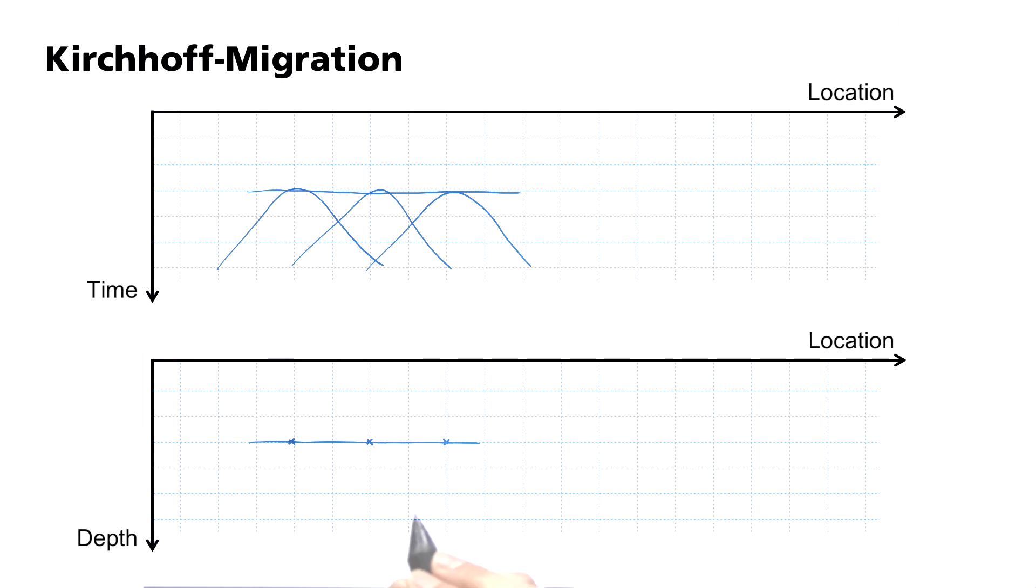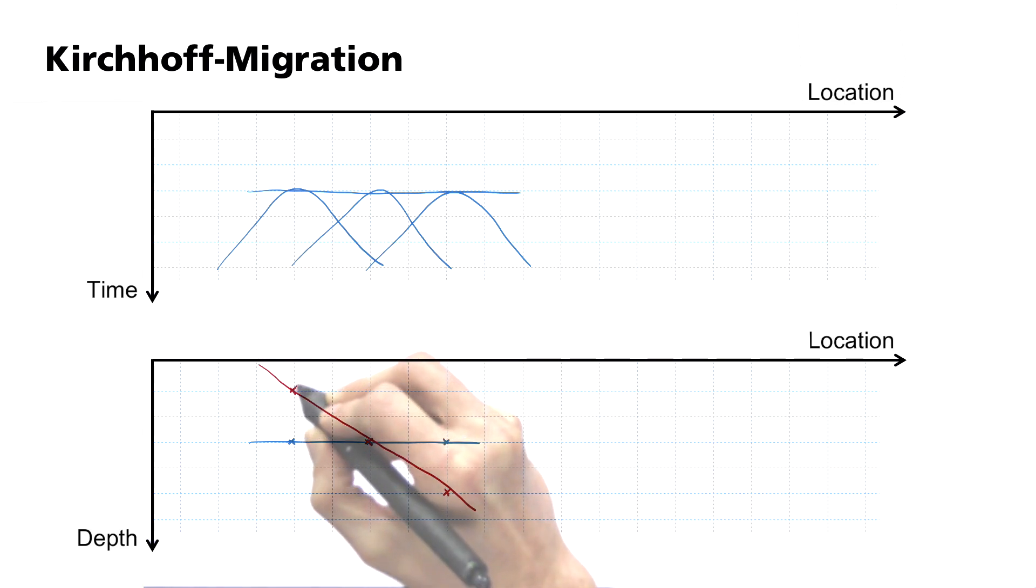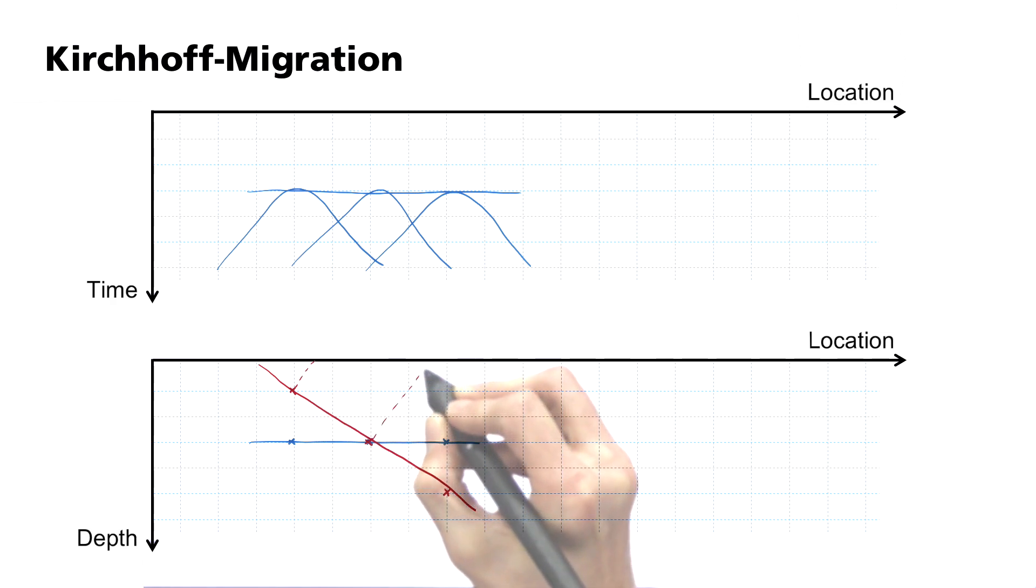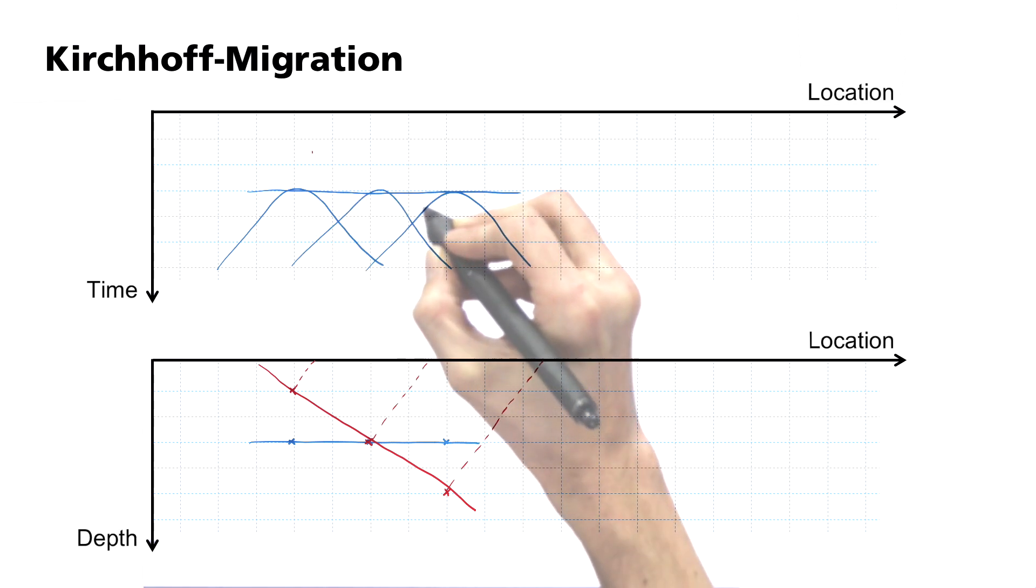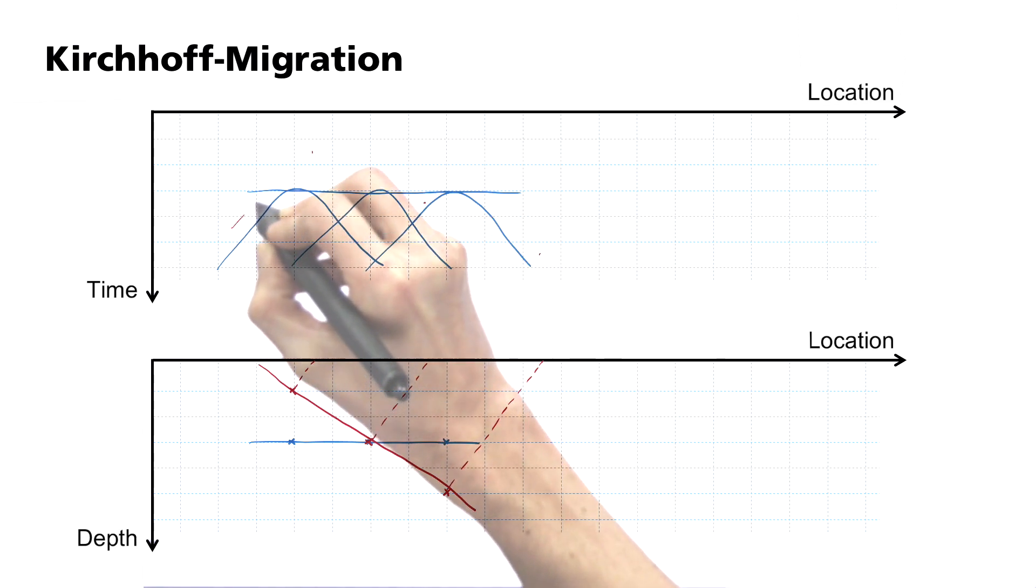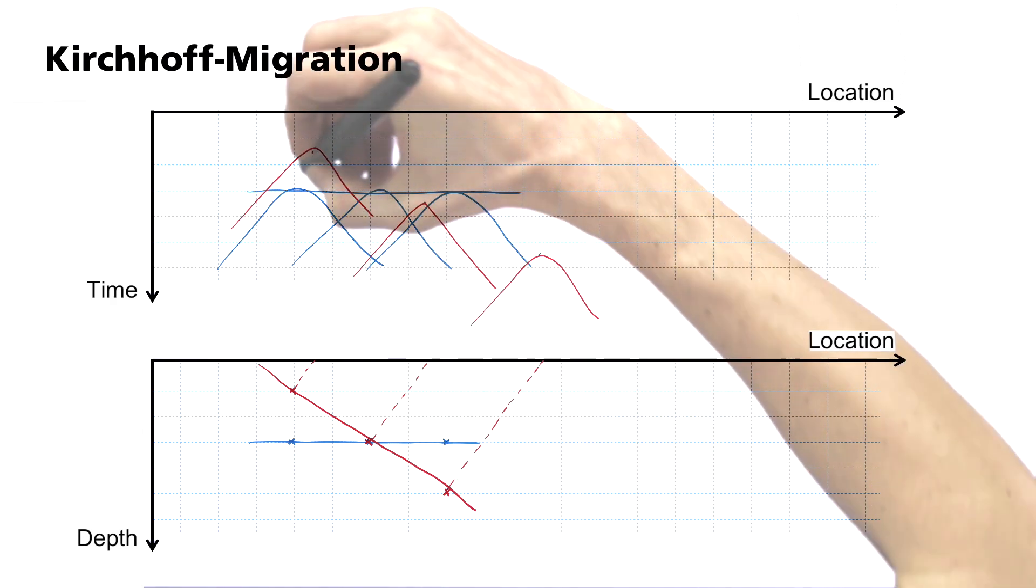Hyperbola are also produced in the profile in the case of an inclined layer. Here I shall draw another example of three points in the subsurface. In this case, however, they are all displaced to the right. They are located precisely at the location of the reflected ray path. The reason for this displacement is the zero-offset geometry.